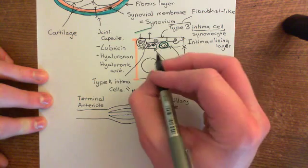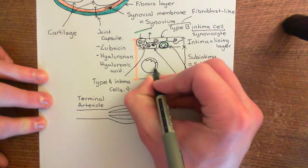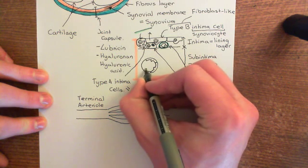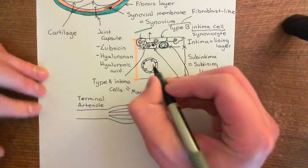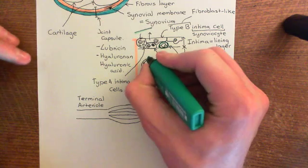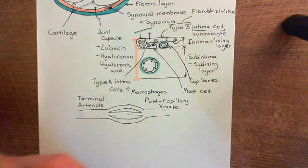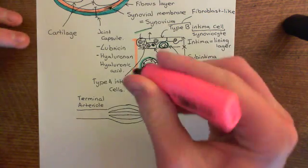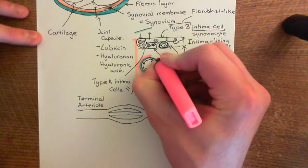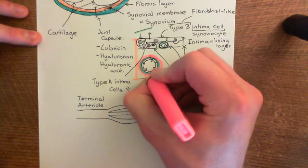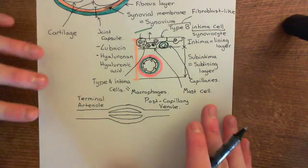Let me draw a terminal arteriole. Here are the endothelial cells. These terminal arterioles have a larger lumen than the capillaries, so it takes more than one endothelial cell to make up the circumference of a terminal arteriole. The endothelial cells line the lumen and sit on the basement membrane — just like the capillary. Around them, you then have a layer of smooth muscle cells. So terminal arterioles have a slightly thicker wall than capillaries: an endothelial cell on the basement membrane, and outside of that a smooth muscle cell.